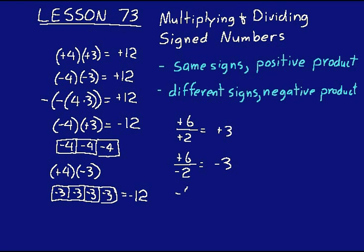Lastly, if you had two negative numbers, you get a positive answer. In division, you can just think of those two rules and change the word product to quotient. If you have the same signs, you get a positive quotient. If you have different signs, you get a negative quotient. It doesn't matter if the negative sign is on top or bottom — whether it's in the numerator or denominator — you still get a negative quotient.